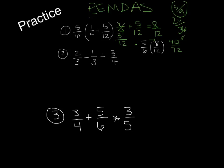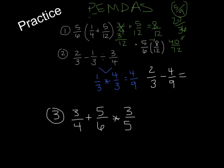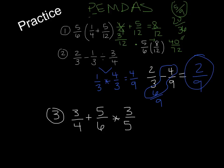Number 2: 2 thirds minus 1 third divided by 3 fourths. Order of operations — do dividing first: 1 third divided by 3 fourths becomes 1 third times 4 thirds, which is 4 ninths. Then take 2 thirds minus 4 ninths. Common denominator is 9: 2 thirds becomes 6 ninths. 6 minus 4 is 2 ninths. That's our final answer — we can't simplify it further.